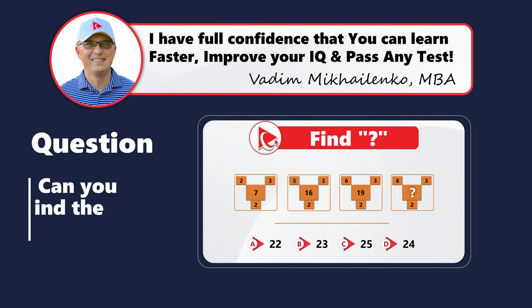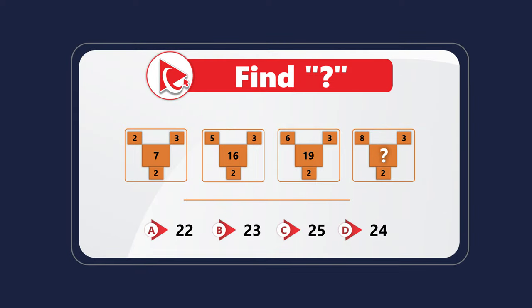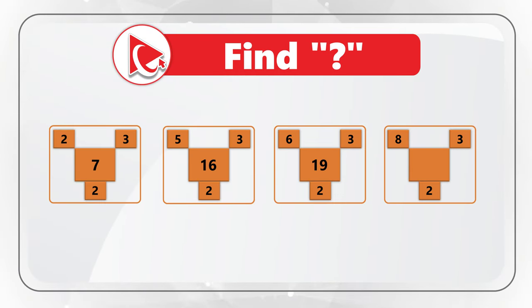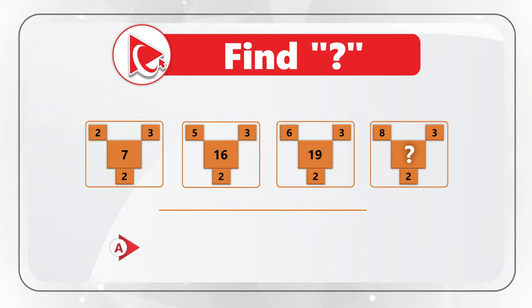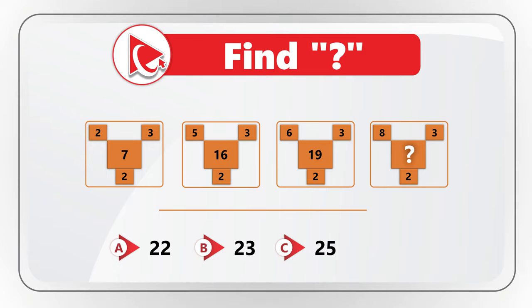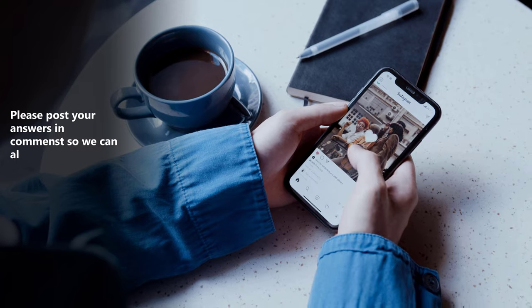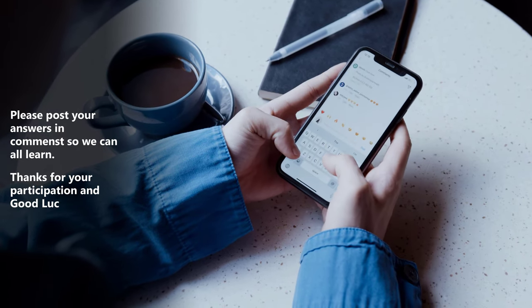Here is a surprise question for you to try your skills. Instead of giving you the answer, I am going to ask you to calculate it and post your solution in comments. You are presented with four shapes — three shapes are fully populated with numbers, and the fourth shape has the middle number missing. You need to detect the pattern and calculate the missing number out of four choices: A (22), B (23), C (25), and D (24). Take a close look, post your answer in comments, and I'll share the final answer and give you feedback. Thanks for participating and good luck.